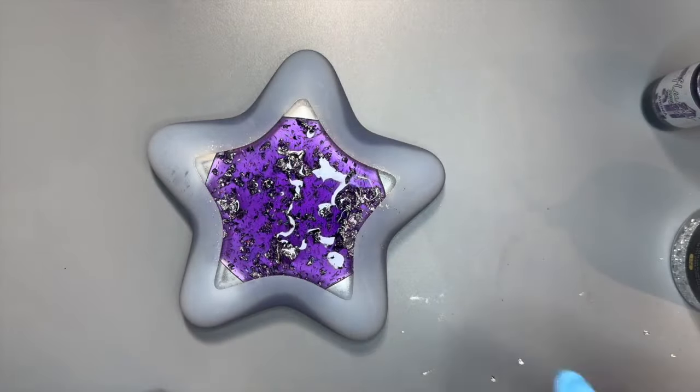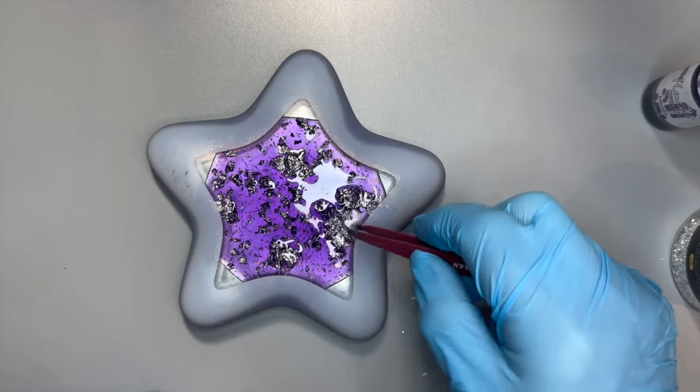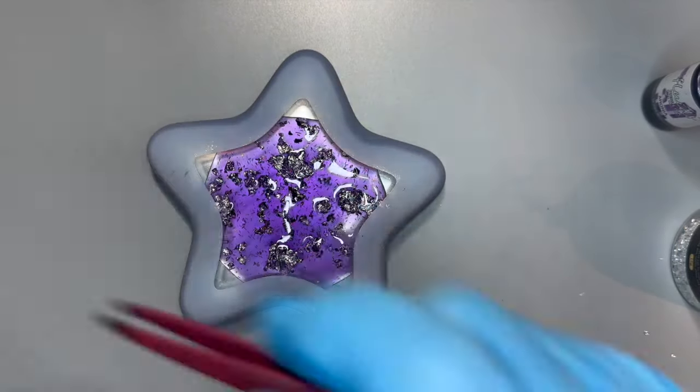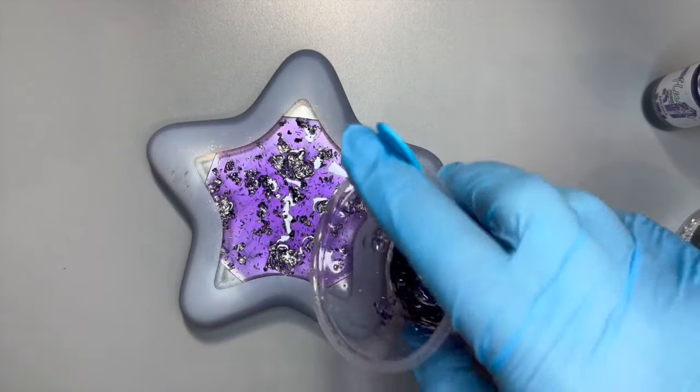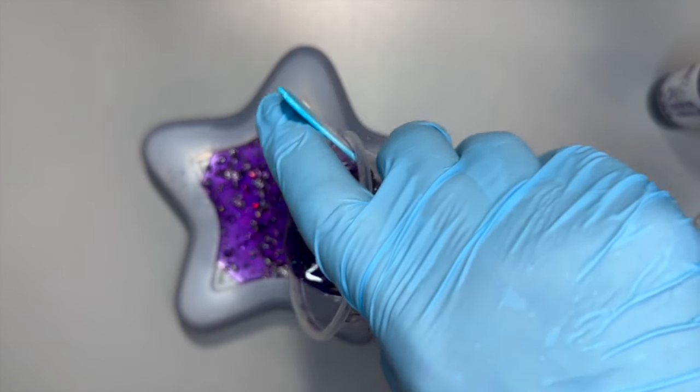Otherwise they'll cause holes or air holes or something. So there's a big clump of silver leaf right there that I'm going to get rid of. And let's see, I'll just keep pouring, pouring, pouring until it gets filled up.